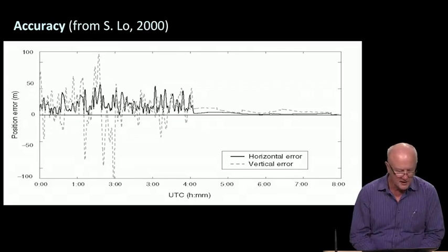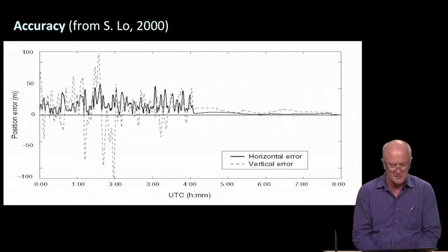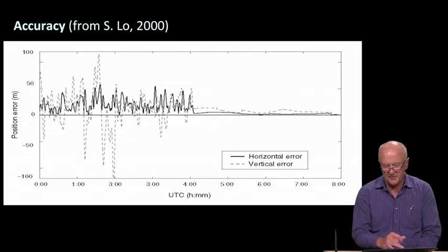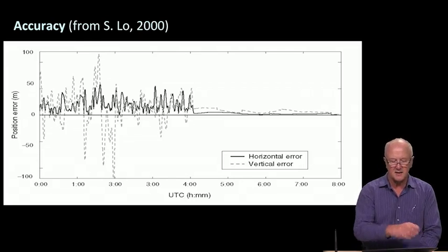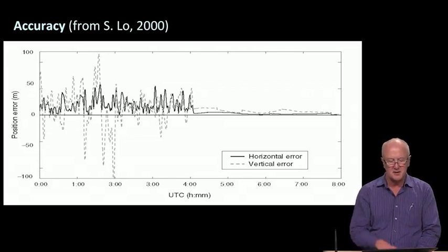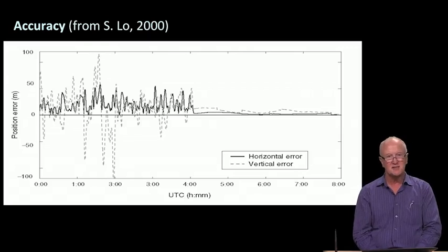So the dashed curve will always be larger than the solid curve. The other critical thing about this view graph is that at 4 o'clock, universal time coordinate, on this day in 2000, Dr. Sherman Lowe measured this dramatic improvement in GPS accuracy. Notice that the position errors went from plus or minus 50 meters down to around plus or minus 5 meters.